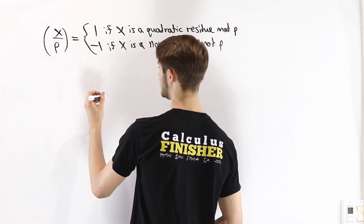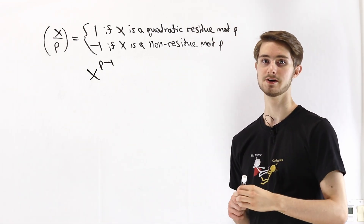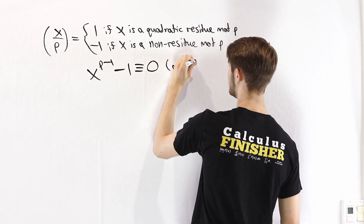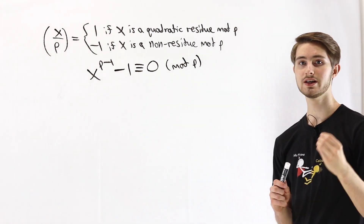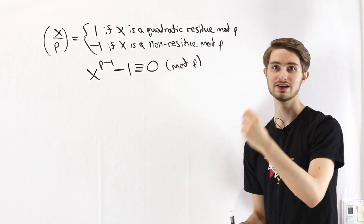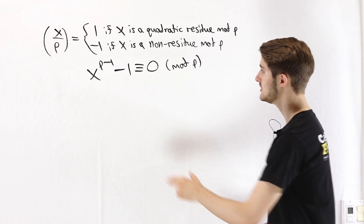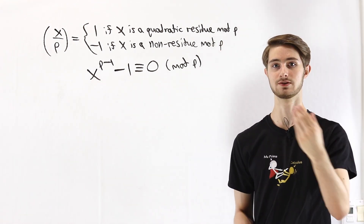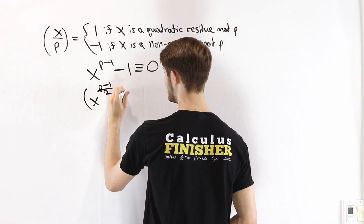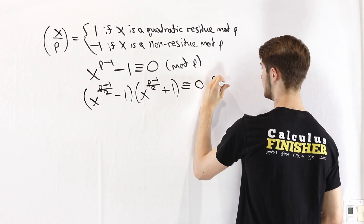The start of this proof comes from Fermat's Little Theorem, which says that x to the p minus 1 is always congruent to 1 mod p. Subtracting 1 from both sides gives x^(p-1) - 1 ≡ 0 mod p. If p is an odd prime — any prime greater than 2 — then p minus 1 is even, so that exponent is a perfect square. This means the expression is a difference of squares, which we can factor as (x^((p-1)/2) - 1)(x^((p-1)/2) + 1) ≡ 0 mod p.